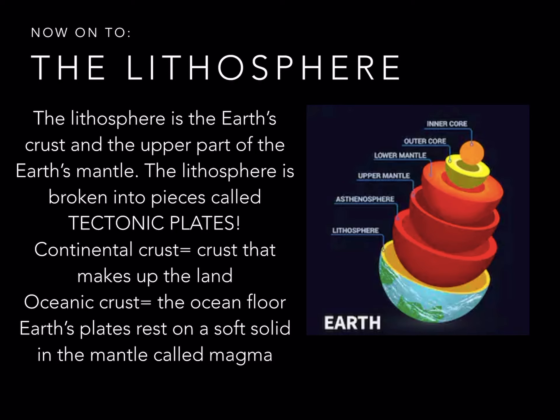The lithosphere is the earth's crust and the upper part of the earth's mantle. The lithosphere is broken into pieces called tectonic plates. Continental crust is crust that makes up the land; oceanic crust is the ocean floor. Earth's plates rest on a soft solid in the mantle called magma. Next week we're going to be learning more about tectonic plates and our oceanic and continental crust.